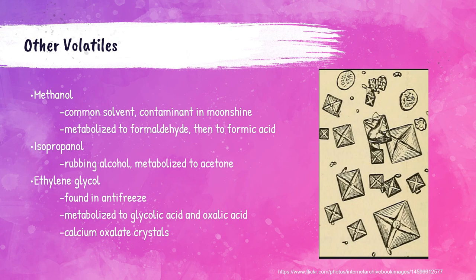Other volatiles besides ethanol include methanol, a common solvent present in formaldehyde and also a contaminant in moonshine; isopropanol, which is rubbing alcohol; and ethylene glycol, which is antifreeze. An important thing to note about antifreeze ingestion is that you can see calcium oxalate crystals in the patient's urine. These crystals look like little diamond ring-like cross-shaped crystals. However, just because calcium oxalate crystals are present doesn't necessarily mean the patient ingested antifreeze — it's just one possible reason.